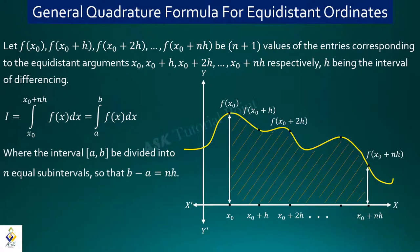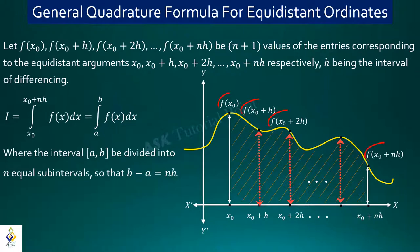I am going to divide the range into n equal sub-intervals. If we draw vertical lines, we represent the arguments with their corresponding ordinates. The intervals have a constant gap denoted by h, where h is a very small quantity.